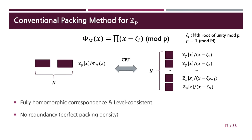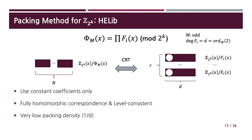First, I will review the conventional packing method for prime field messages. The idea is to choose parameters so that the cyclotomic polynomial fully splits modulo p. Then we can apply CRT ring isomorphisms to pack several Zp messages into a plaintext in Zp[x] quotiented by a cyclotomic polynomial. Note that since this packing method is defined by an isomorphism, it offers fully homomorphic correspondence between messages and plaintext, and the packing structure is maintained after homomorphic operations. It also offers perfect packing density. However, we cannot use the conventional packing method for Z2K messages, since the cyclotomic polynomial never fully splits modulo 2^K.